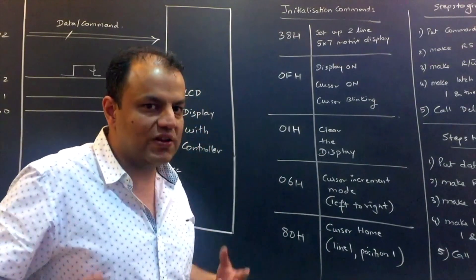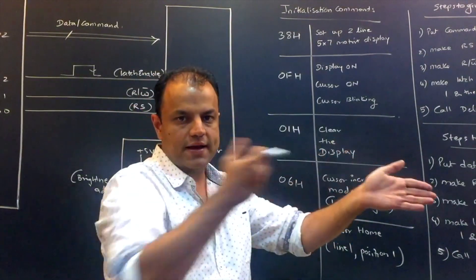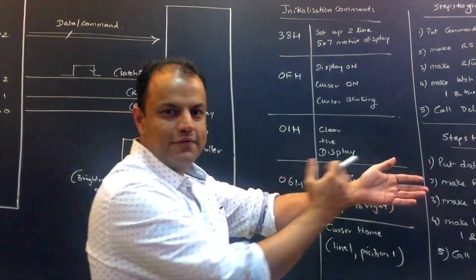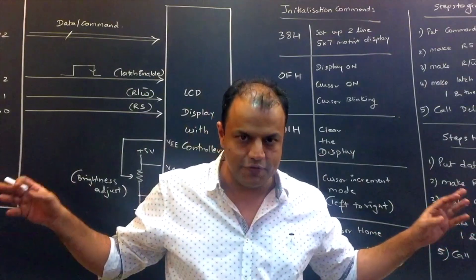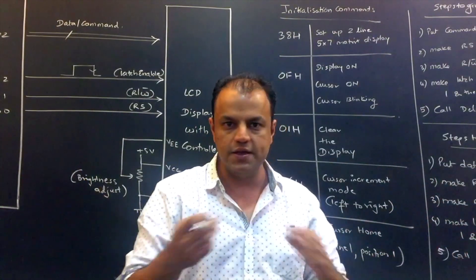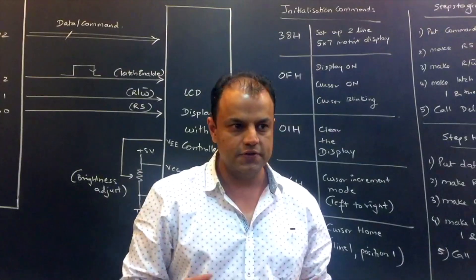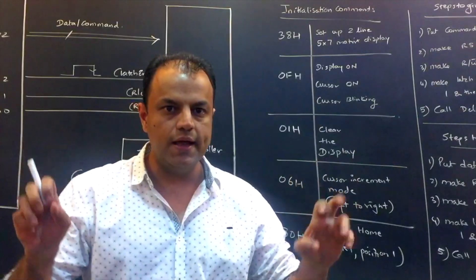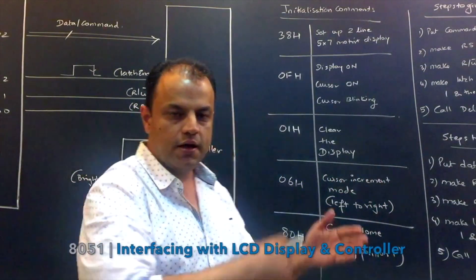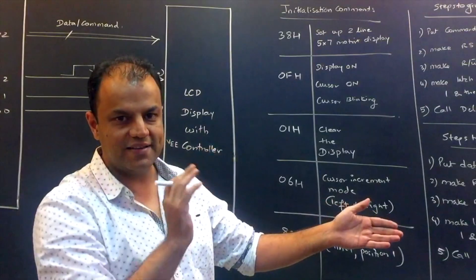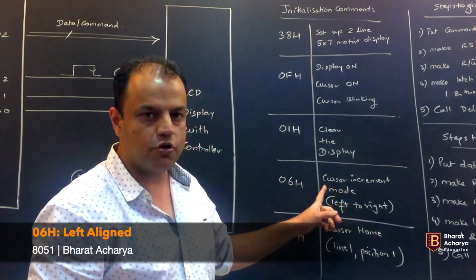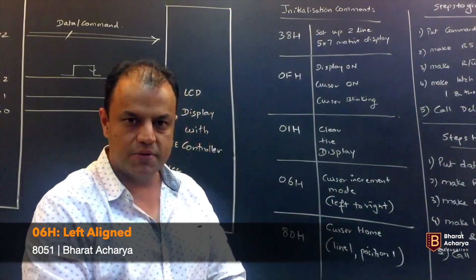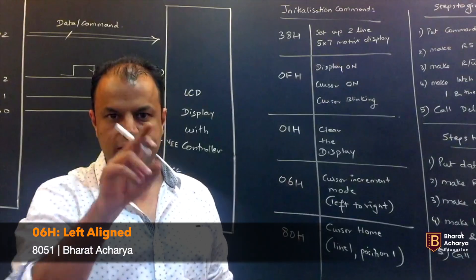Now you are about to start displaying. You've got to choose whether you want it to be right aligned or left aligned. Text is a universal notation - text is left aligned. Numbers are right aligned. Normal English textual display follows this notation. So I've chosen left aligned. Left aligned is also called cursor increment mode where your display will go from left to right. For that the number is 6. In case you want to do right aligned, give the number 7.